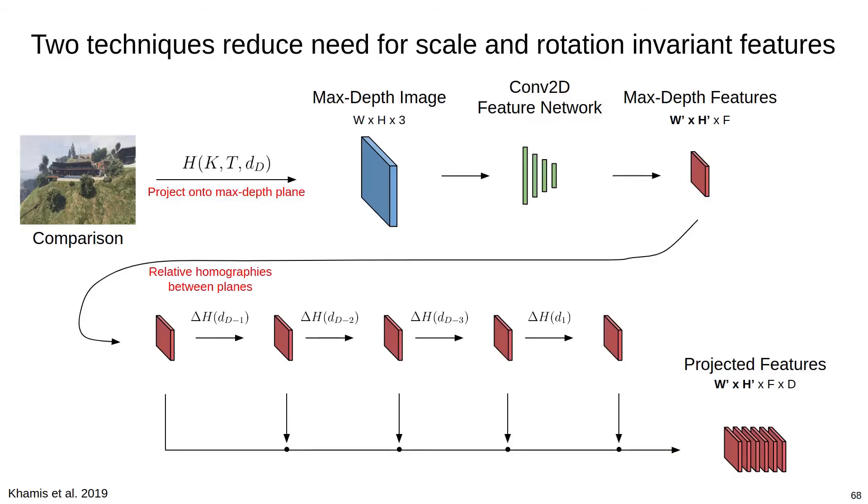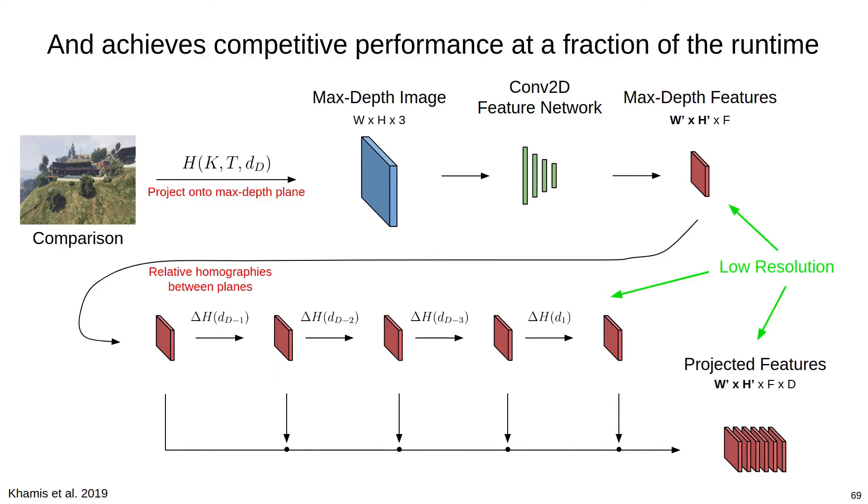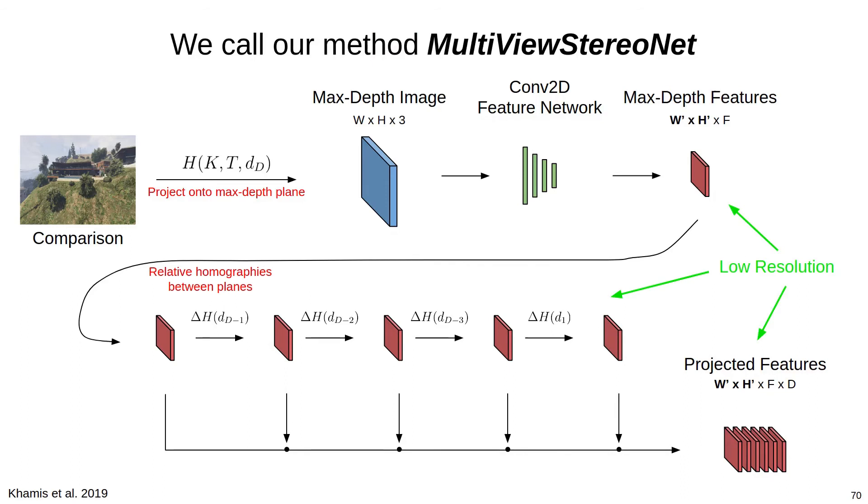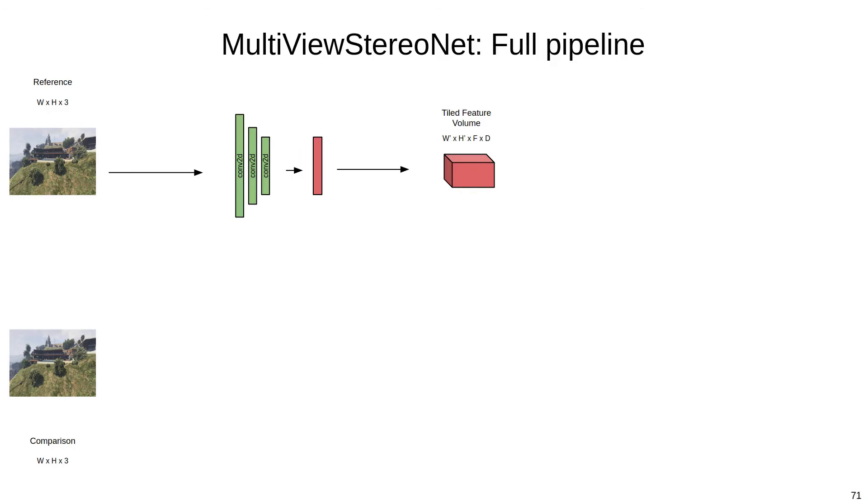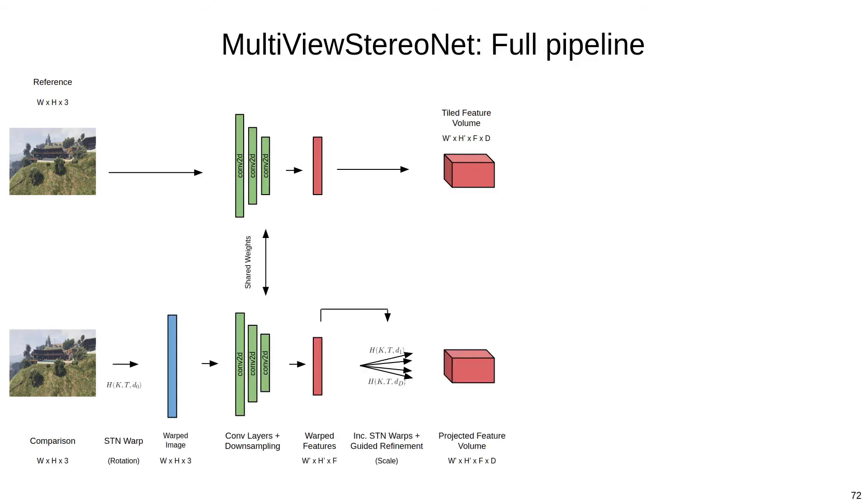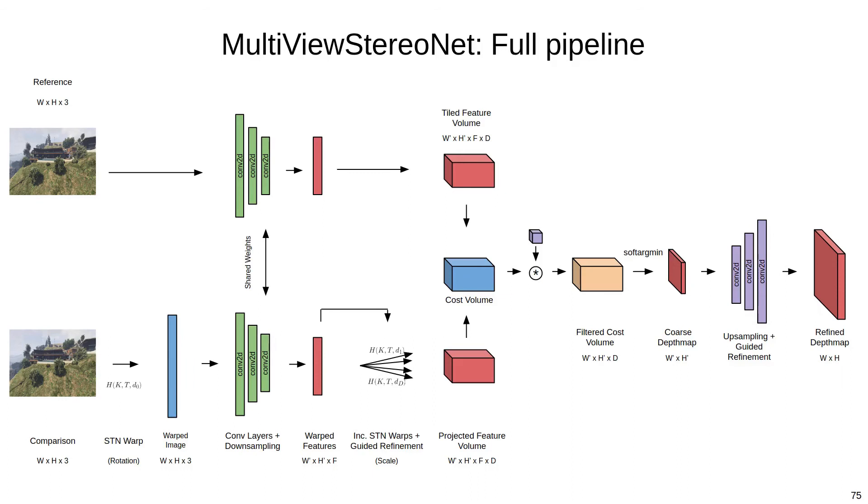The combination of these two techniques allows our approach to compensate for the known viewpoint changes, which reduces the need for scale and rotation invariant features, while achieving competitive reconstruction performance at a fraction of the computational cost. We call our full method Multiview StereoNet, and we'll briefly go over the full pipeline. In the full pipeline, we extract features from the reference image using 2D convolutions, and then tile the feature map to create a feature volume. Features from the comparison images are extracted using the proposed viewpoint compensated incremental feature extractor. The difference between these two feature volumes yields a low resolution cost volume. After filtering the volume, we use the differentiable soft argmin operator to extract the min-cost depth map. This final depth map will be low resolution, however, so we apply a series of upsampling and guided refinement layers to produce the final refined depth map at the full resolution.